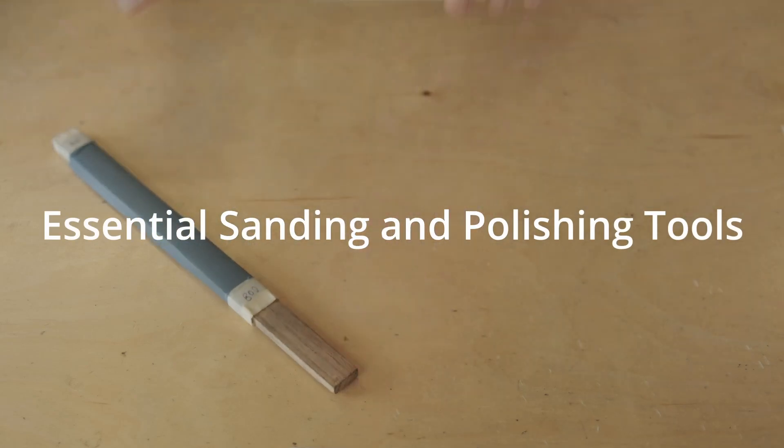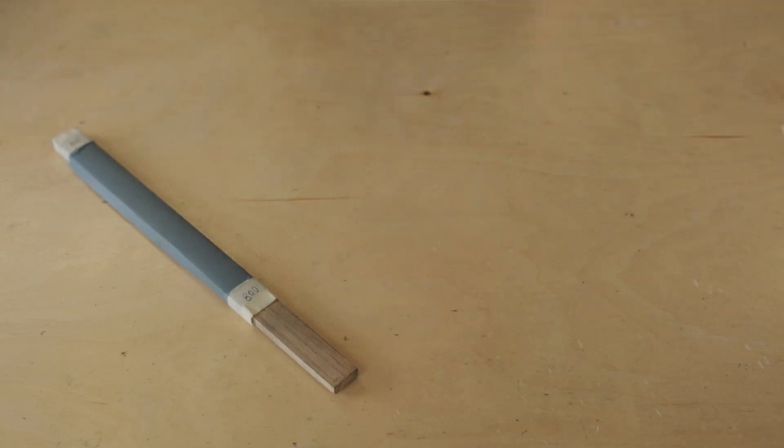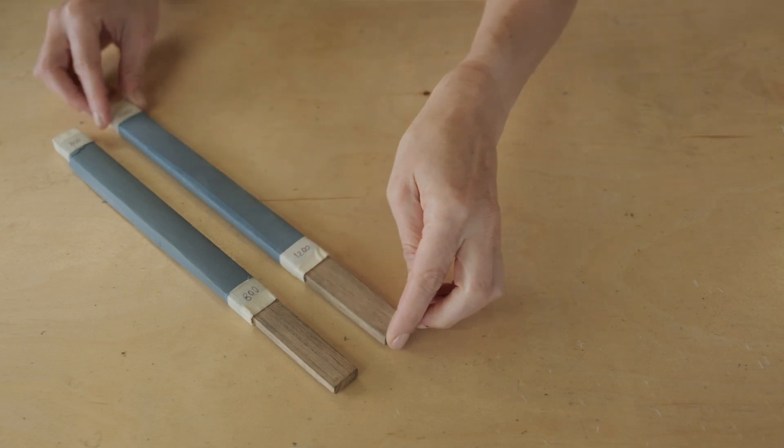Something that we use a lot when we're making jewelry and a process that we do a lot is sanding, and we sand using emery sticks.